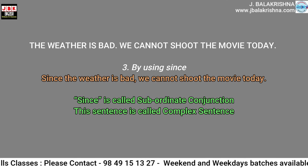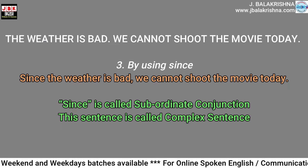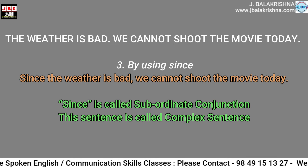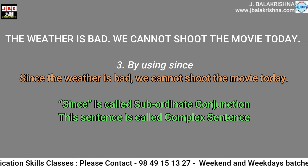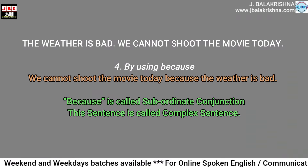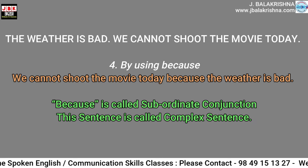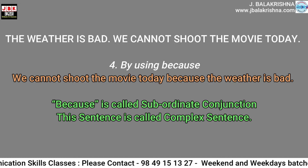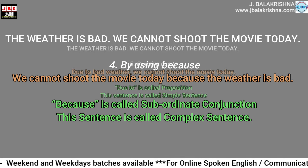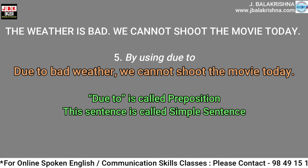Method three: by using 'since' — 'Since the weather is bad, we cannot shoot the movie today.' 'Since' is called a subordinate conjunction and this sentence is called a complex sentence. Method four: by using 'because' — 'We cannot shoot the movie today because the weather is bad.' 'Because' is called a subordinate conjunction and this sentence is called a complex sentence.